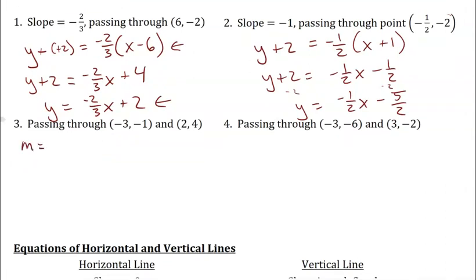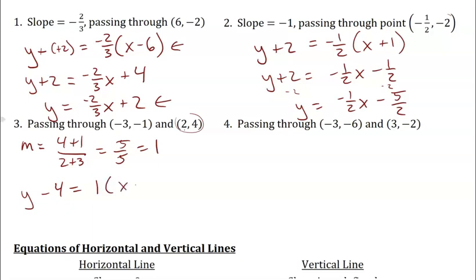For two points, find the slope first: y2 minus y1 is 4 plus 1, over x2 minus x1 is 2 plus 3 — that's 5 over 5, which is 1. Using the point with positive values, point-slope form gives y minus 4 equals 1 times (x minus 2). For slope-intercept, add 4 to both sides: y equals x plus 2.